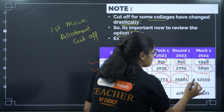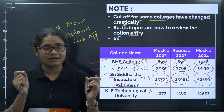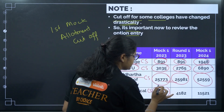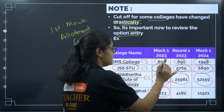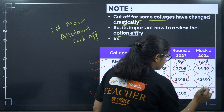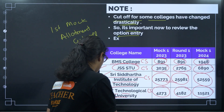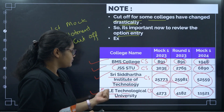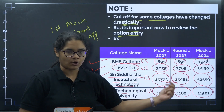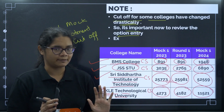But in mock 1 2024, Siddhartha Institute's cutoff has gone down to 52,559 — a drastic decrease. Next, KLE Technological University: mock 1 2023 was 4,273, round 1 2023 was 4,182, but mock 1 2024 it has gone down to 11,521, again a drastic decrease. There have been reports that KLE's cutoff may be wrong, but till now there is no official data, so we consider whatever cutoff is given in the official website PDF.